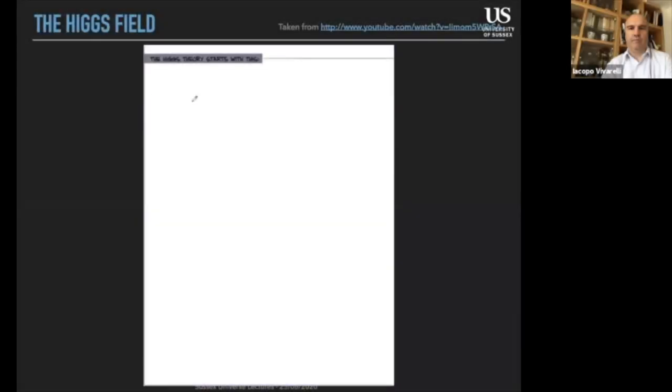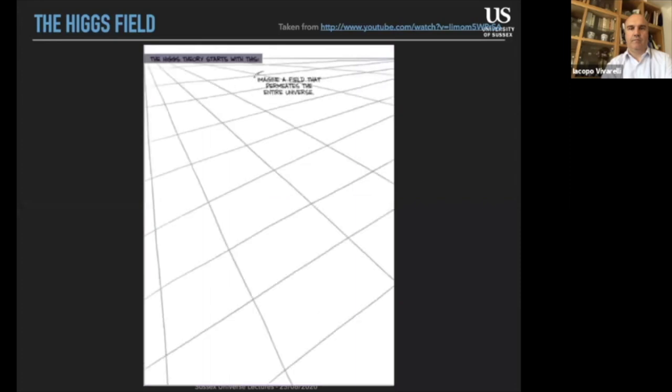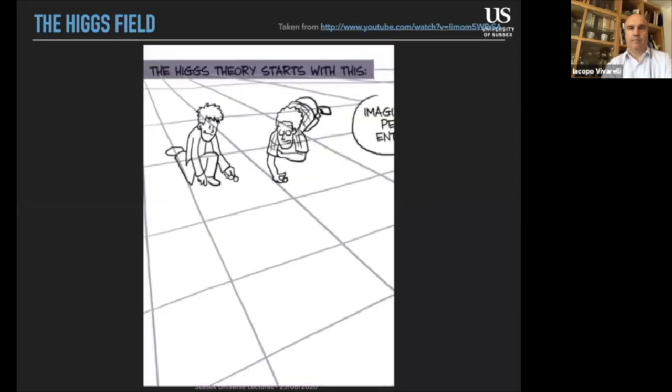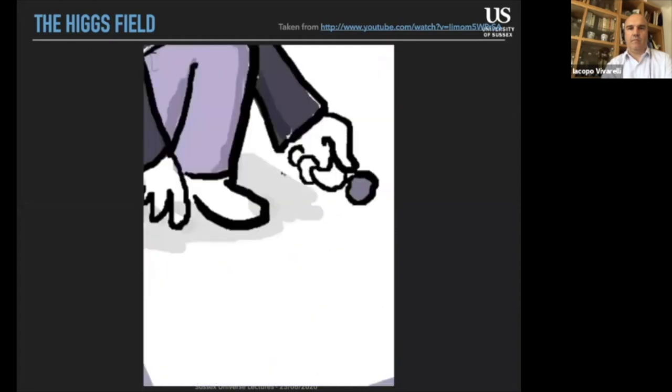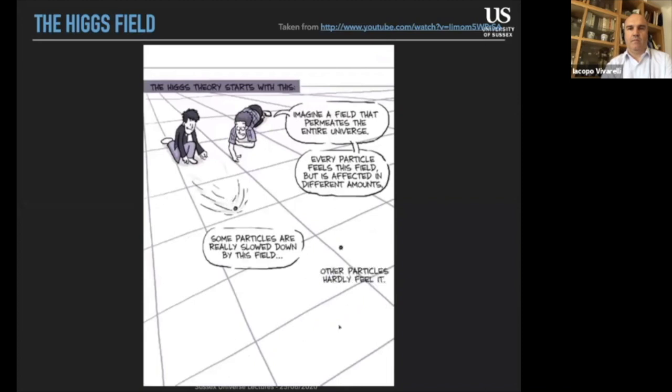The Higgs theory starts with this. Imagine a field that permeates the entire universe, and every particle feels this field, is affected by this field, in different amounts. So some particles are really slowed down by interacting with this field, like swimming through molasses, and other particles hardly feel it. So the ones that hardly feel it, they have a small mass. The ones that are really affected by it, they couple strongly to this field, are slowed down a lot, they have a large mass.